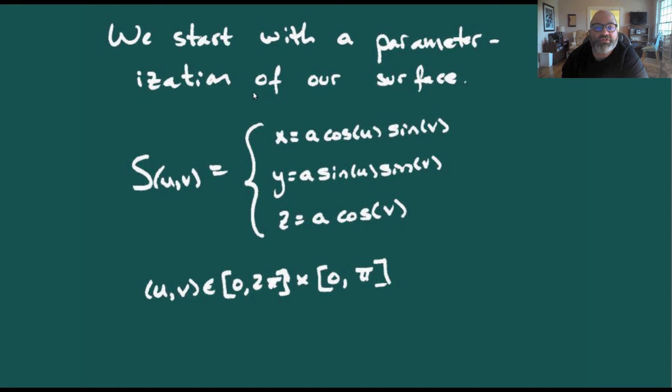We'll start with a parameterization of our surface using spherical coordinates: x = a cos(u) sin(v), y = a sin(u) sin(v), and z = a cos(v). For the entire sphere, we have u and v in [0, 2π] × [0, π].